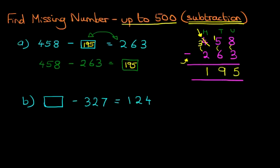Now I'm sure you know what we're going to do here. Again, the objective is to make sure that the missing number, that's this box, is on one side of the equal sign. So what we're going to do is take this number 327, and move it across to the right-hand side.